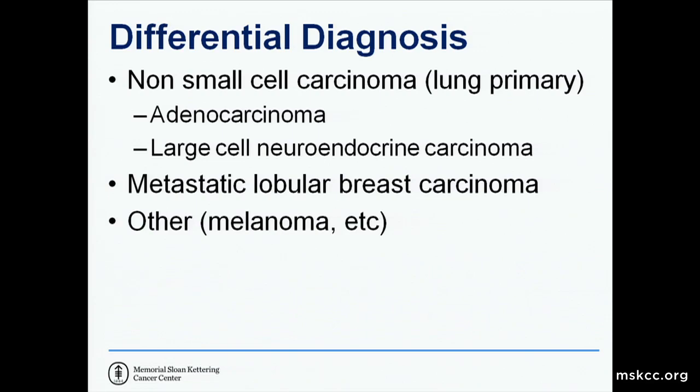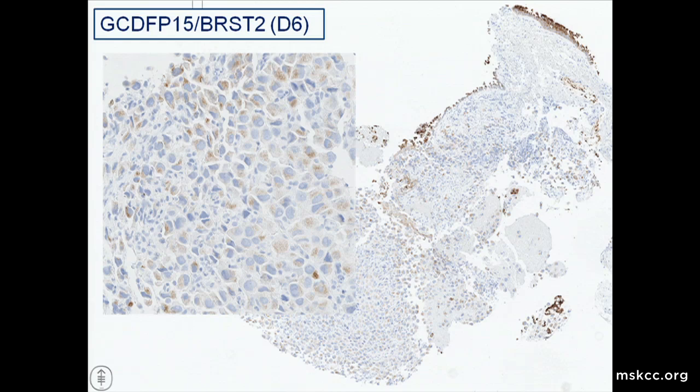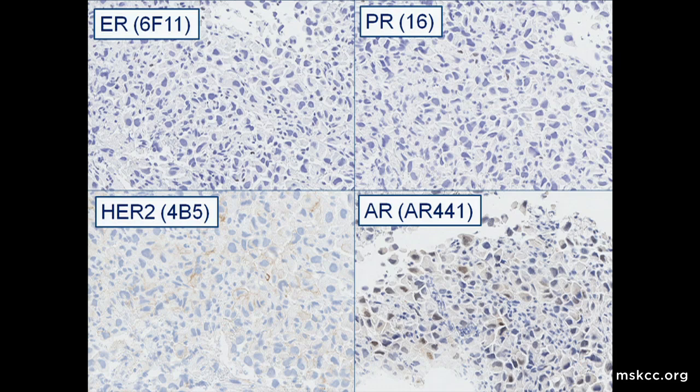The IHC of the endobronchial biopsy was positive for GCDFP-15. At low power you can see the respiratory epithelium is also staining, and they're benign, which was curious. The tumor is negative for ER and PR, HER2 is weakly positive, and there is some weak positivity with androgen receptor. If this is a lobular carcinoma, it's unusual to have ER negativity.